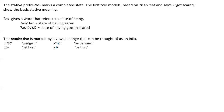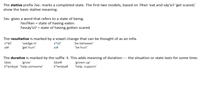The durative is marked by the suffix barred-L. This adds a meaning of duration — the situation or state lasts for some time. In the third set of models, 'grow' becomes 'grow up', which is a situation that is enduring. The root meaning 'help someone' doesn't occur alone, but with the durative barred-L suffix it becomes a word that refers to a situation of support lasting some time.